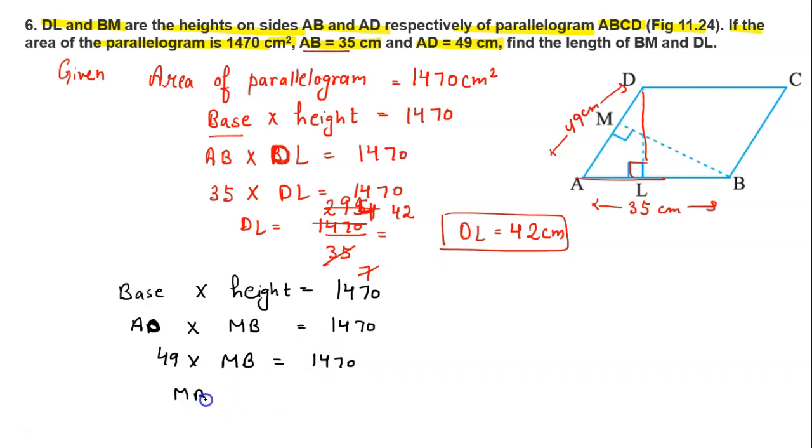1470 divided by 49 equals MB. Here we have 7 into 7 is 49, 7 into 2 is 14, 7 into 3 is 21. So MB value is 30 centimeters.